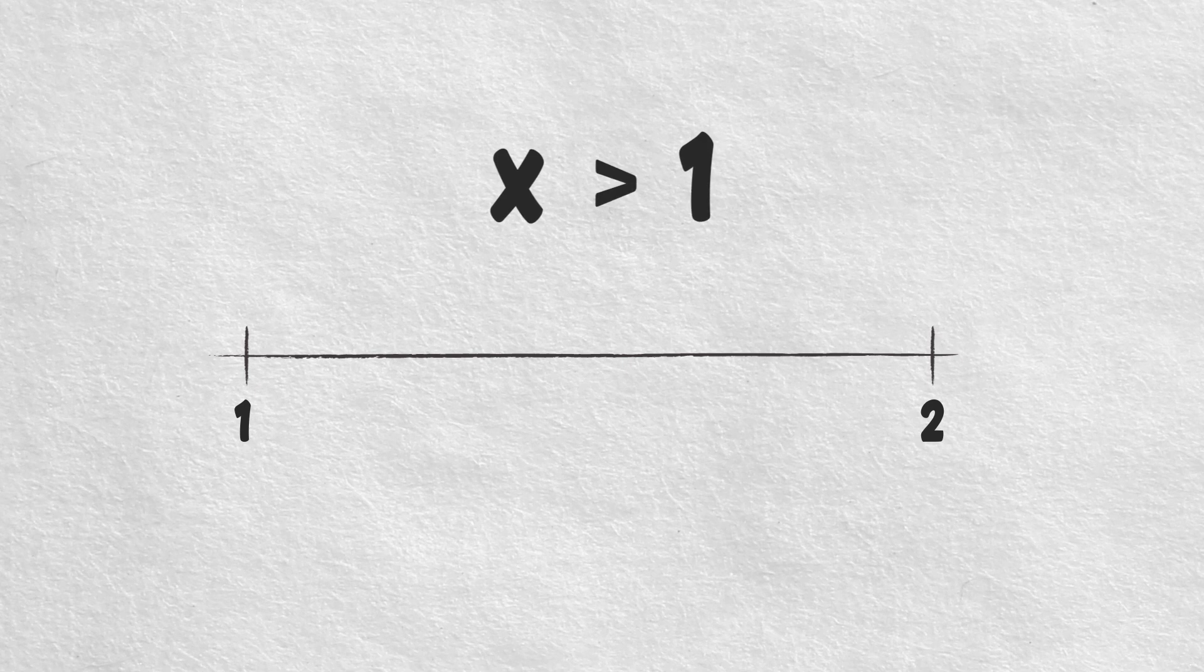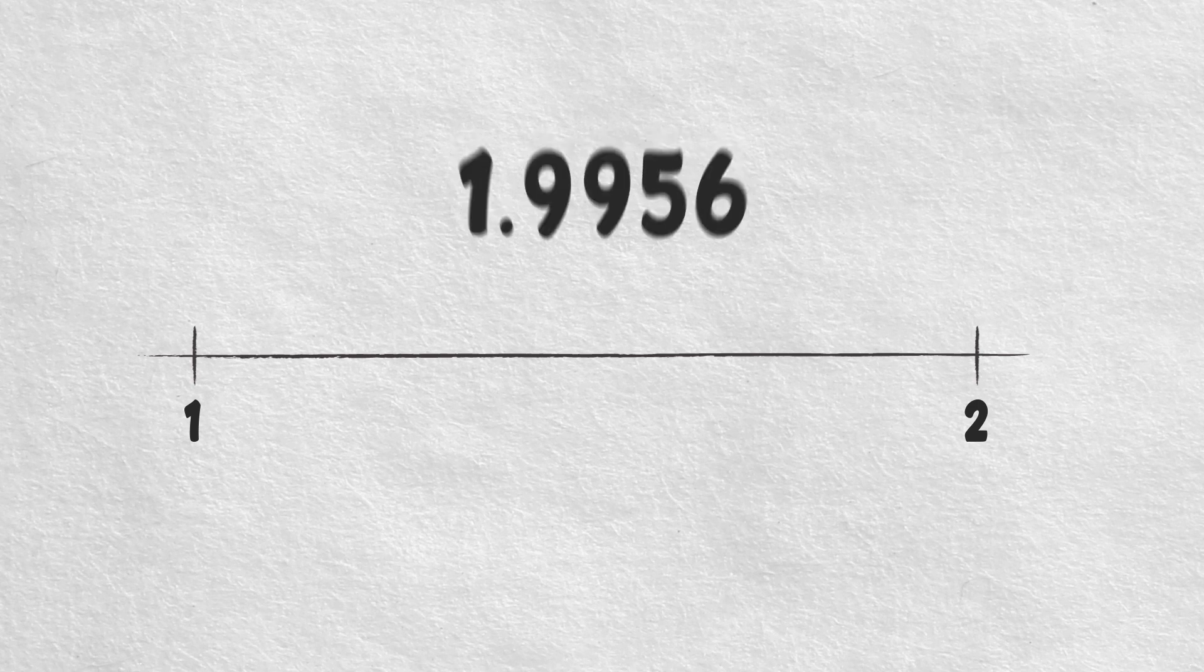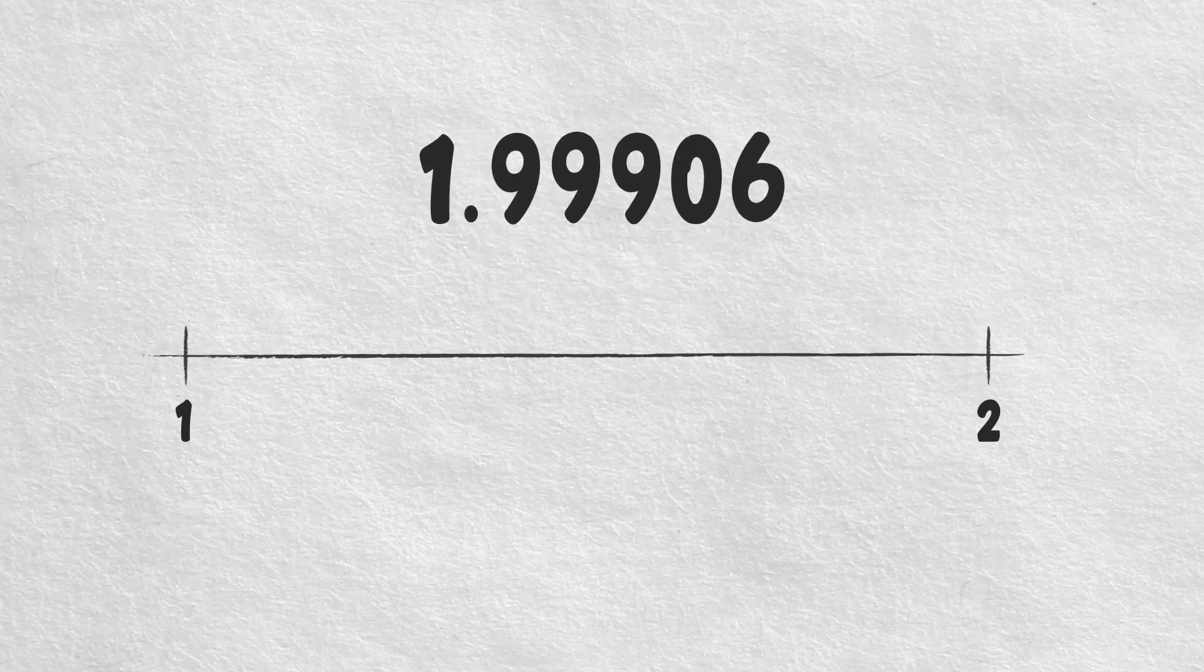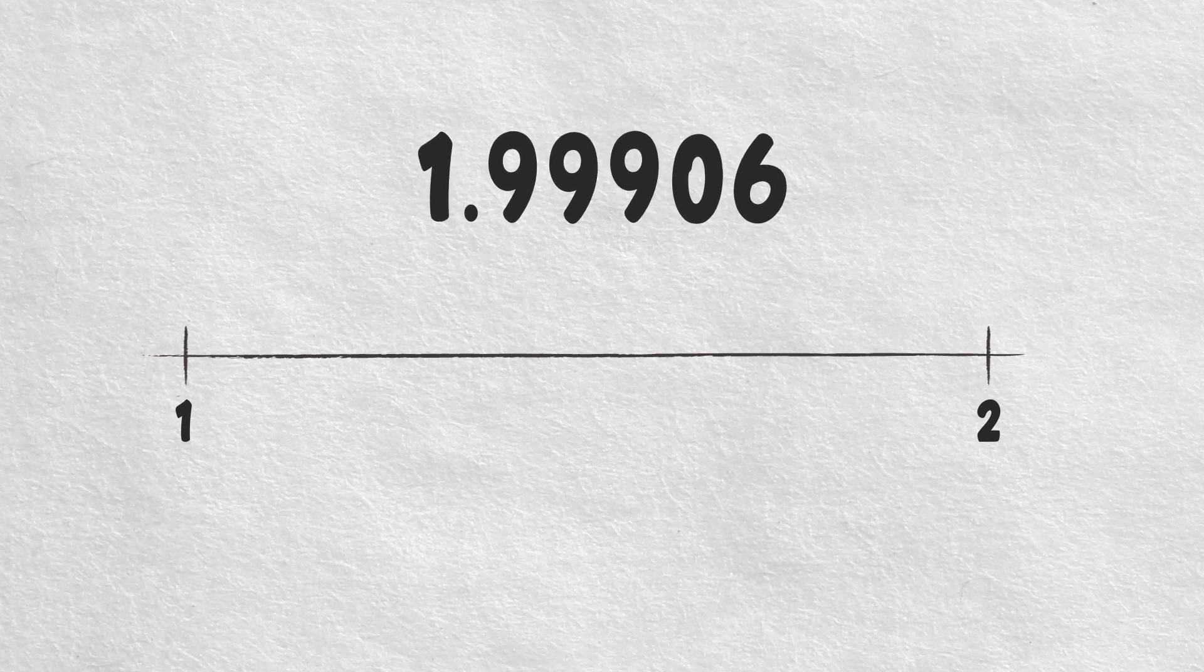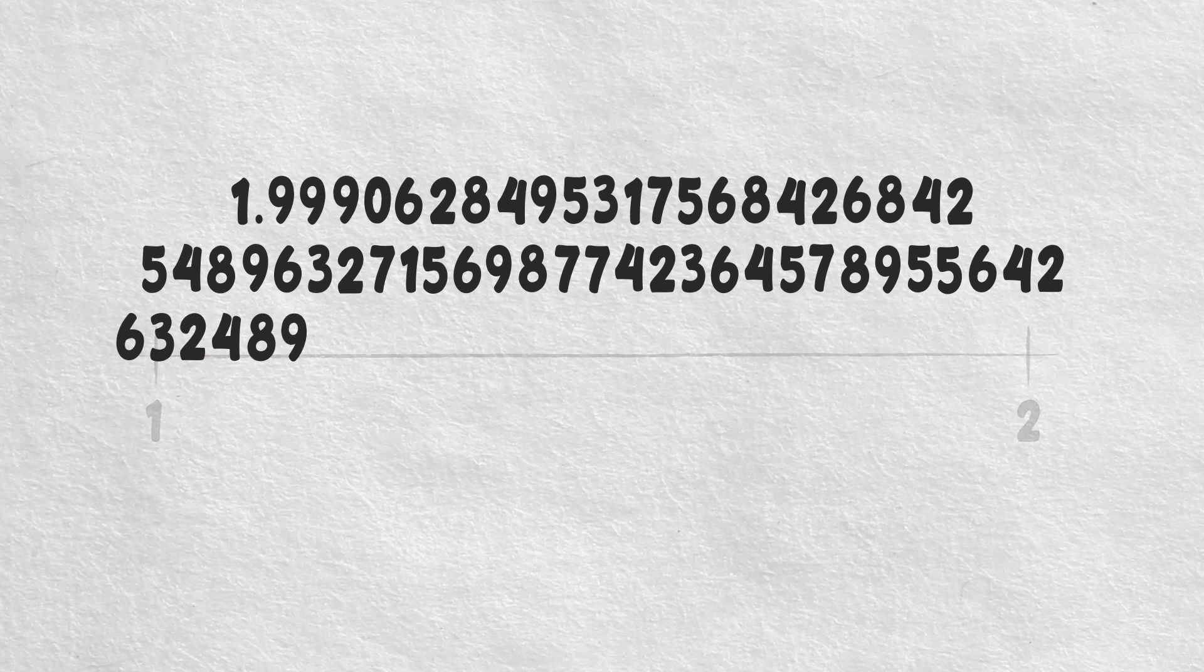Imagine a number line within 1 and 2. Any number greater than 1 and smaller than 2 would fall in between them. The numbers can be 1.1, 1.25, 1.673, 1.9956, 1.99906. Okay, okay, okay. I understood. These decimals keep going on and on and on.